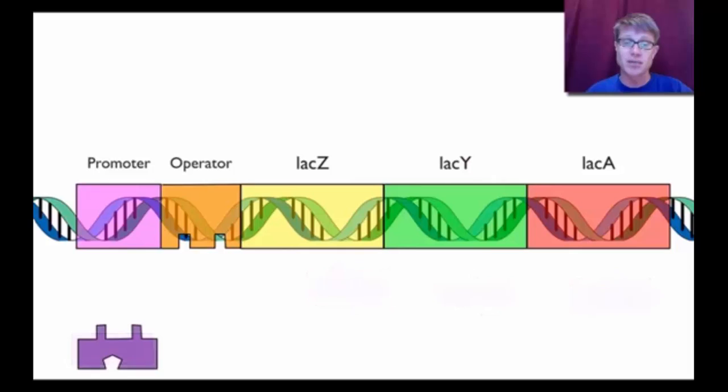So now the lactose is gone. What's happening to our repressor? It's going back to that original shape. So it's a cool way we can have positive control. Lactose shows up. Then we make all the proteins that can actually deal with that lactose. Shows up again. We're going to get rid of that repressor and we continue. So that would be positive control.